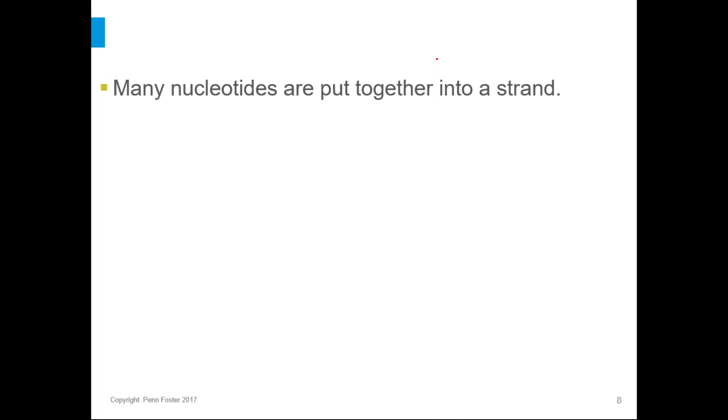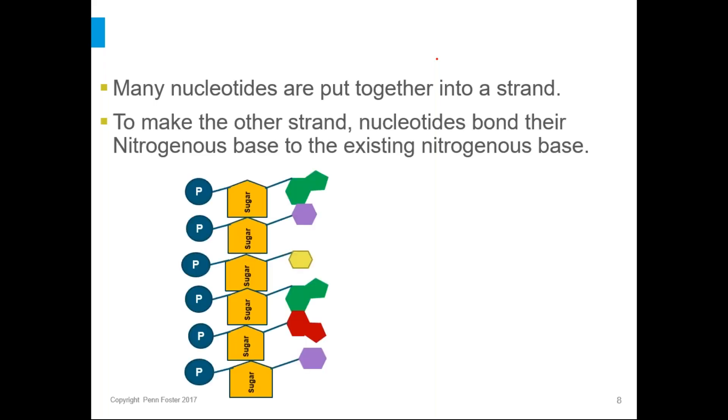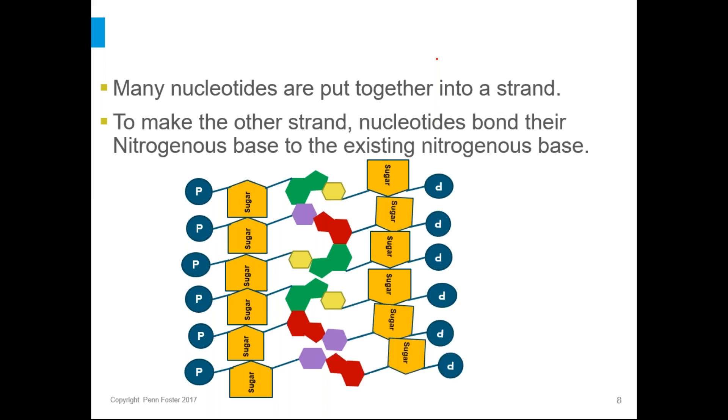So a lot of nucleotides come together to make a strand and look something like that, but that's only half of the DNA molecule. That's one side of it. To make the other strand, other nucleotides come in and they bond their nitrogenous bases to the existing bases. And now we have a complete DNA molecule. I mean, this is just a very tiny chunk of it, but you got both sides.